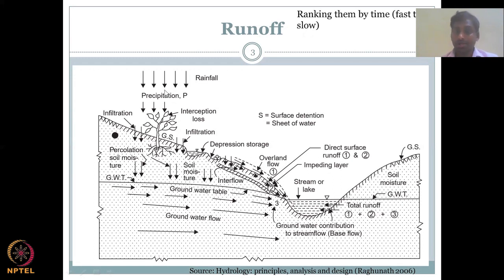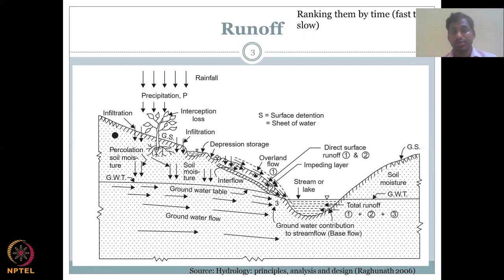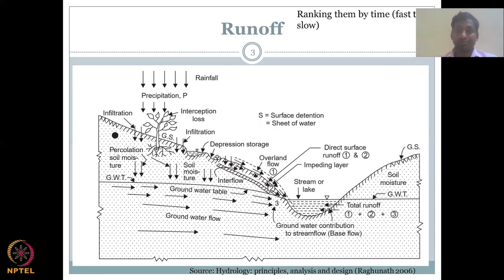Whatever water from precipitation which does not go underground or is not taken up by plants can go as overland flow — that is the first component. Surface runoff and overland flow are both phenomena which happen on the top of the surface.